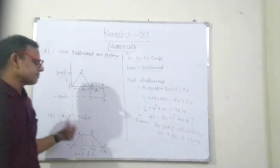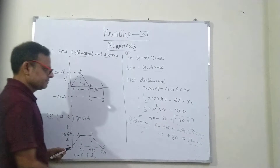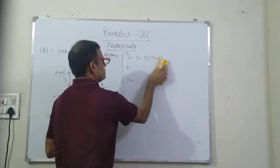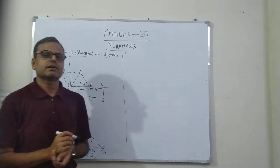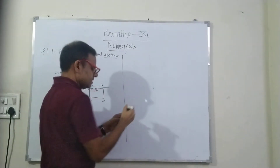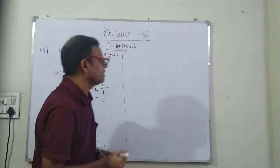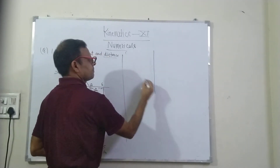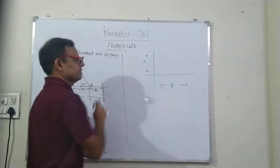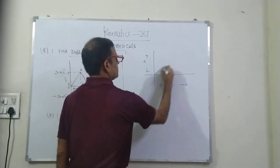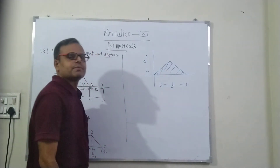Now let us come to the second question, that is the acceleration-time graph. For the acceleration-time graph, first of all, it is very important to understand the concept — what does the graph represent? The acceleration-time graph is very important. Time is on the x-axis and acceleration on the y-axis. In this graph, the area always represents the change in velocity.